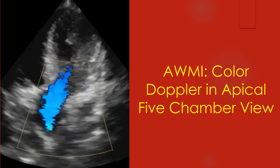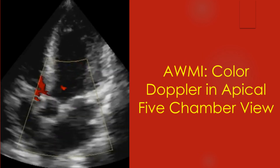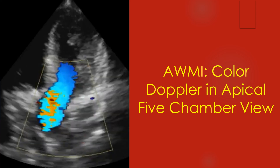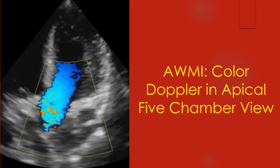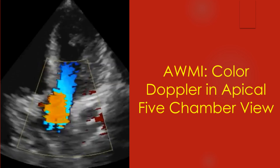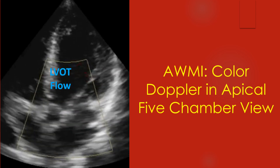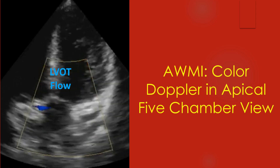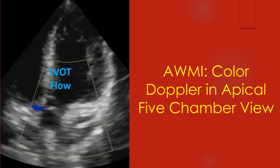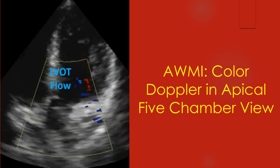Apical five chamber view with color Doppler imaging shows the aorta and aortic valve in addition to the four cardiac chambers. Blue flow away from the transducer is seen in the left ventricular outflow tract and proximal aorta.